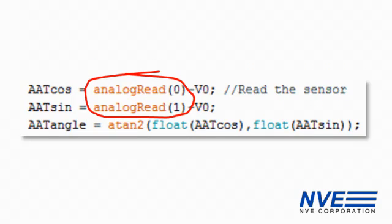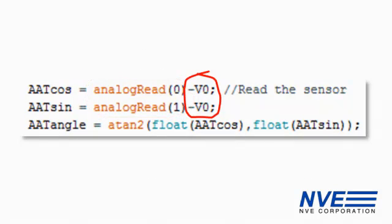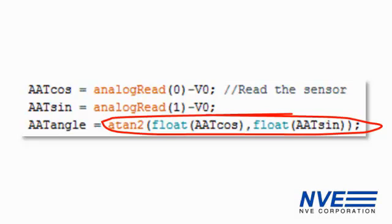The sensor is running on a single supply so we subtract the offset V0, typically half the supply. The simplest way to get the indicated angle is the inverse tangent of the ratio of the cosine and sine outputs.